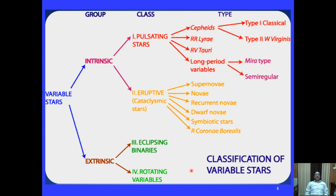Intrinsic variable stars are further divided into pulsating stars — which expand and contract rhythmically like a heartbeat — and eruptive variables, which undergo cataclysmic eruptions like those seen on the Sun. Extrinsic variables include eclipsing binaries, where one star eclipses the light of another, and rotating variables, where spots on the stellar surface cause brightness changes as the star rotates into the line of sight. Pulsating stars are the most suitable candidates for astro-seismology.